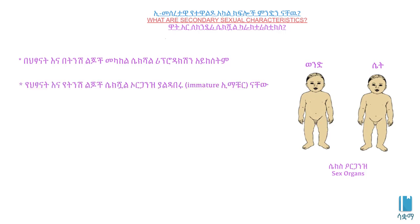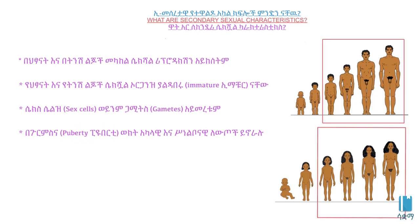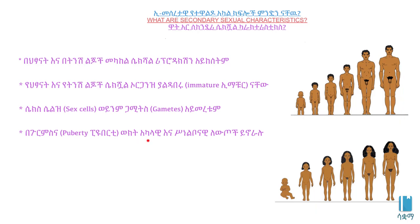The Human Reproductive System is one of the most important aspects of the human reproductive system, including its important aspects.